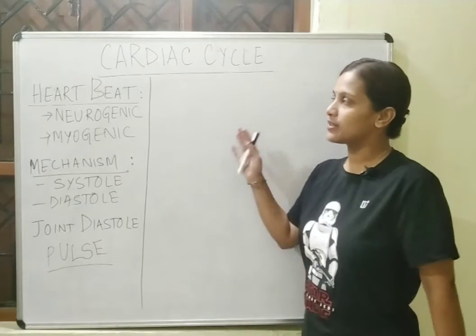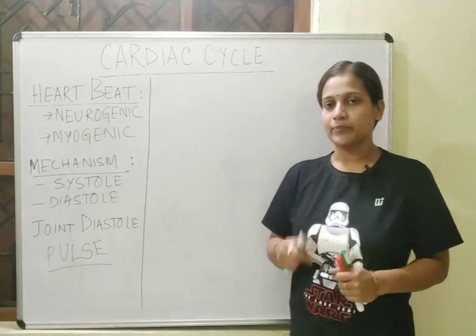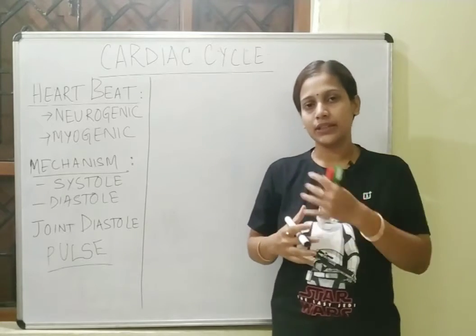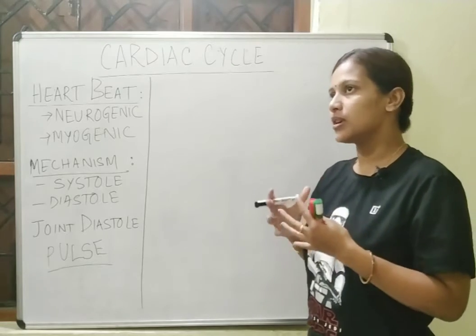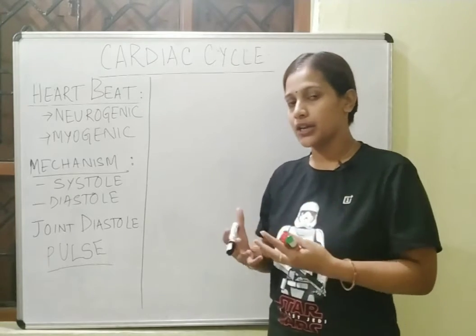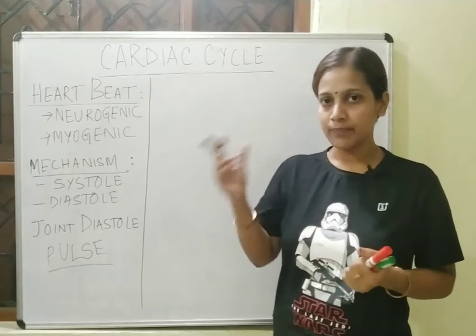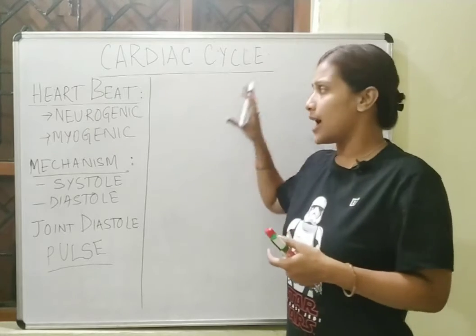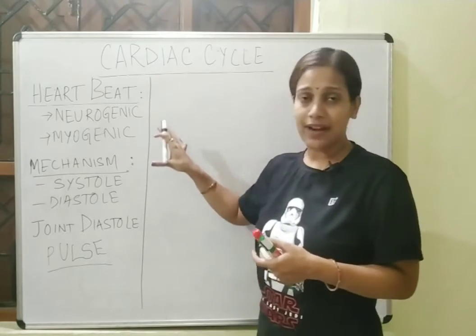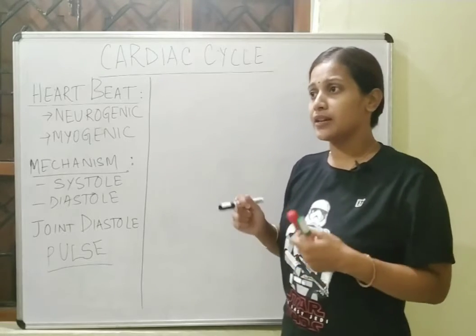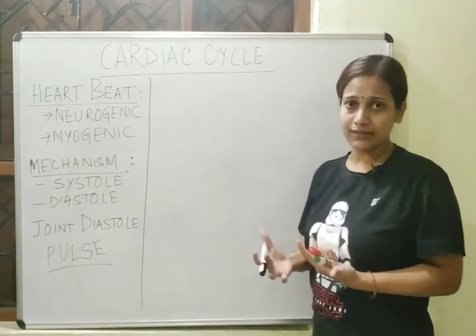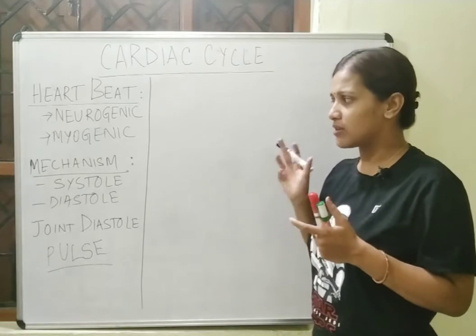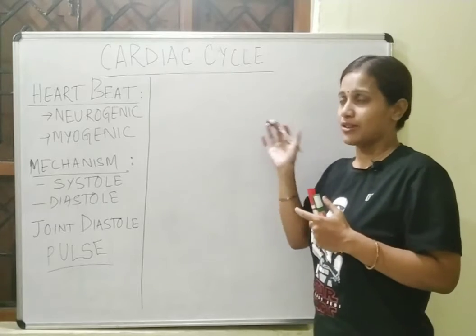Another concept of the circulatory system is your cardiac cycle. In cardiac cycle, we will be covering the events that together bring about the contraction and relaxation of the heart in order to circulate the blood throughout your body and get it back. We will also cover how long this lasts, what are the controlling factors, what is heartbeat, and what is pulse. In short, we are going to cover the mechanism of the heartbeat.